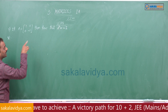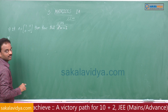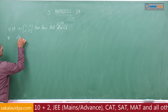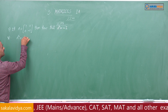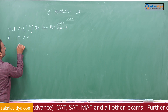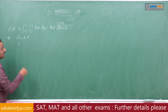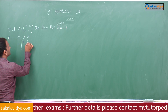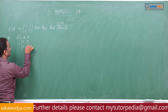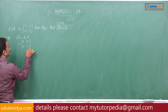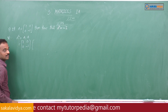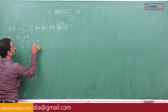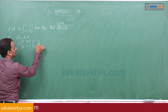We have to show A squared equals minus I. So A squared can be written as A into A. The given matrix A equals [[I, 0], [0, -I]] multiplied by A again, [[I, 0], [0, -I]].